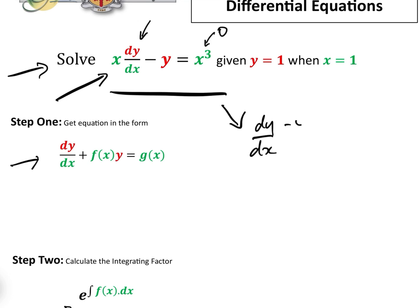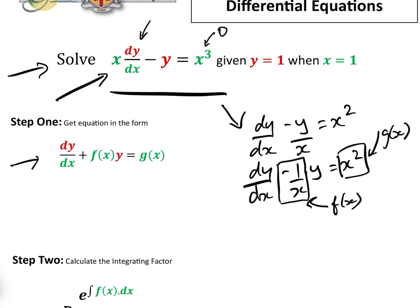We just divide everything by x. And I'm just going to rewrite that as dy dx minus 1 over x times y equals x squared. And the reason I'm going to write that is because then we can say that this here is f of x, and this here is g of x, just so we can see that it is in the correct form.